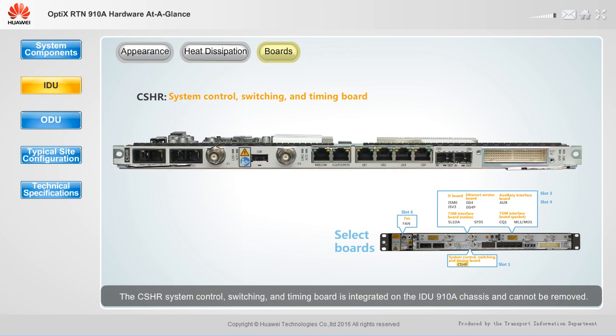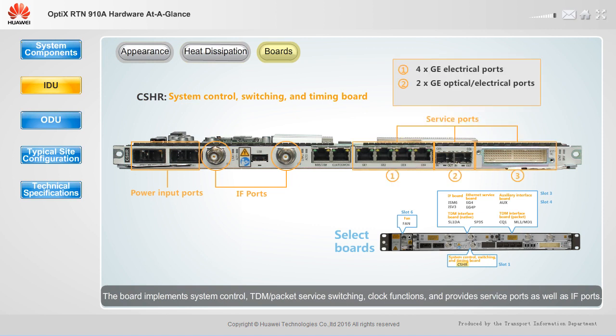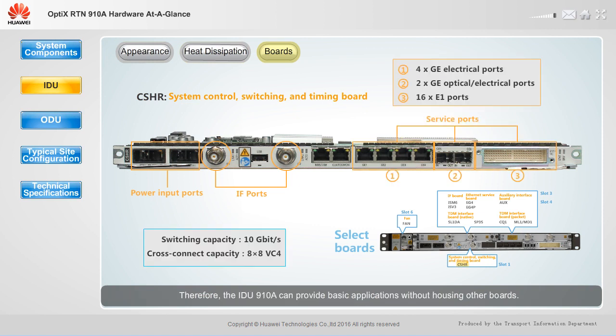The CSHR system control, switching, and timing board is integrated on the IDU910A chassis and cannot be removed. The board implements system control, TDM packet service switching, and clock functions, and provides service ports as well as IF ports. Therefore, the IDU910A can provide basic applications without housing other boards.